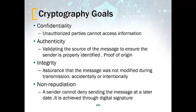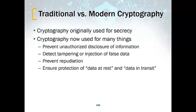To repeat: confidentiality — unauthorized party cannot access the information. Authenticity — validating the source of the message to ensure the sender is properly identified. Integrity — assurance that the message was not modified during transmission, accidentally or intentionally. Non-repudiation — sender cannot deny sending the message at a later date, achieved through data signatures. Cryptography originally was used for secrecy, but now it is used to prevent unauthorized disclosure, detect tampering or injection of false data, prevent non-repudiation, and ensure protection of data at rest and data in transit.